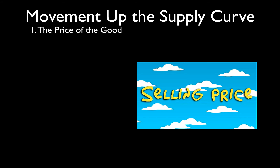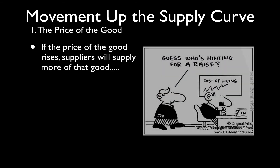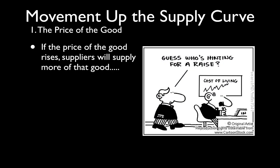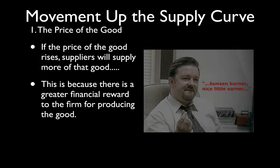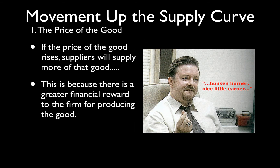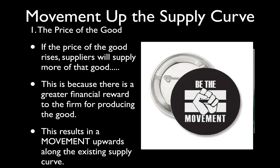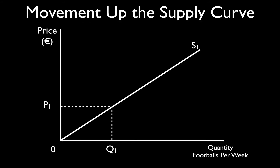A movement up the supply curve is caused by a change in the price of the good itself. If the price of the good rises, suppliers will supply more of that good because there is a greater financial reward to the firm from producing it. On the diagram, we have our price axis, quantity axis with units per time period, origin, and the supply curve S1.